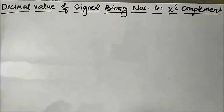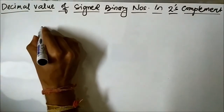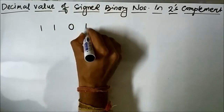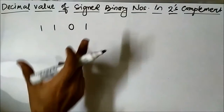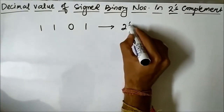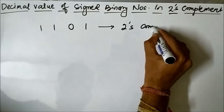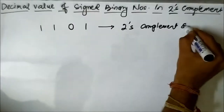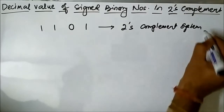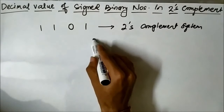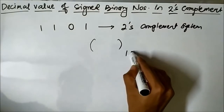Suppose we have been given a signed binary number — let us say 1 1 0 1 in 4-bit format. It is a signed binary number which is represented in 2s complement system, and we have to determine its equivalent decimal value.